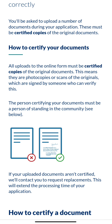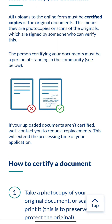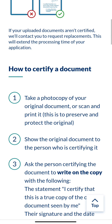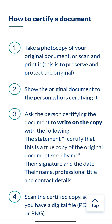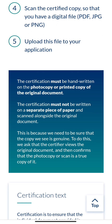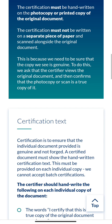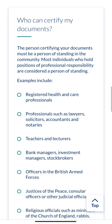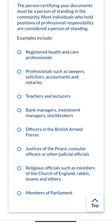Regarding certifying your documents — copies must be correctly certified by a person of good standing in the community, such as an accountant, a pastor, or your boss at work. The certified statement written on the photocopy should read: 'I certify that this is a true copy of the original document as seen by me.' The person then signs, writes their name, email address, and date. The website shows a clear example image of what a certified document looks like.